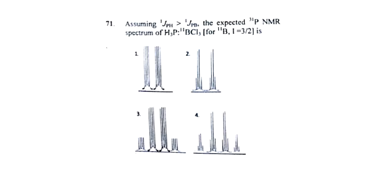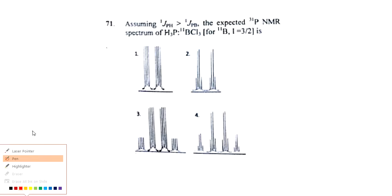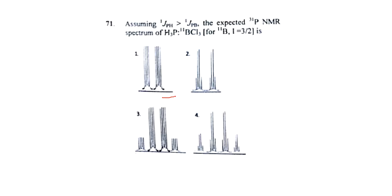This is the question asked on 2017 December. Assuming JpH is greater than JpB, the expected 31P NMR spectrum of the compound is given. For B11, the spin I value is also given as 3/2. Different splitting patterns are given as options.